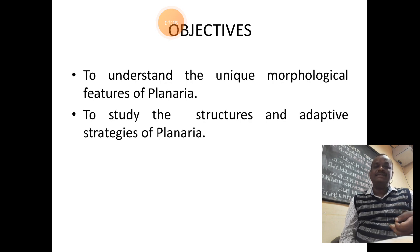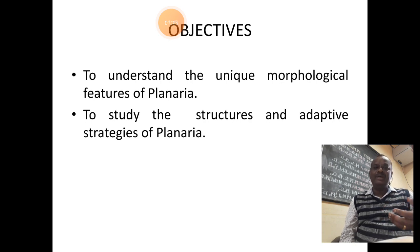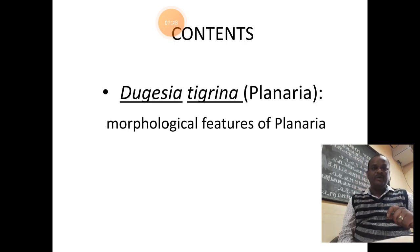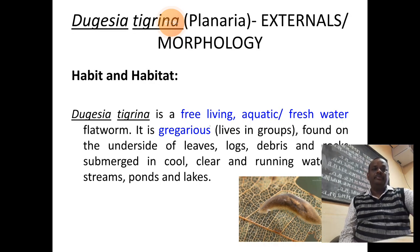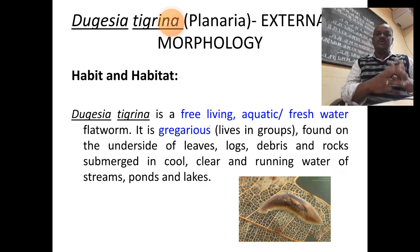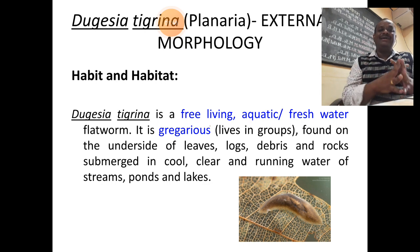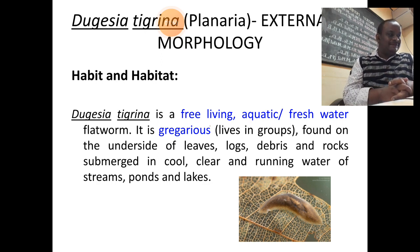Dugesia is related to the morphological features of planaria and those structures which make the animal adaptive to the habitat in which it lives. The content we are going to understand is the morphological features of planaria. Dugesia is a free-living freshwater form of Platyhelminthes or flatworms. It lives in groups, hence are called gregarious.